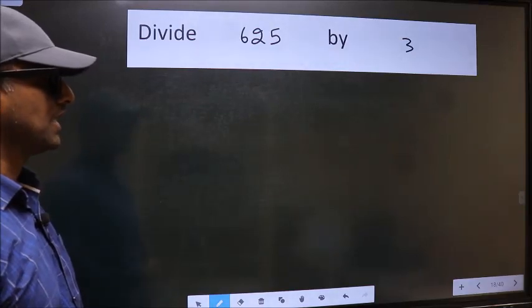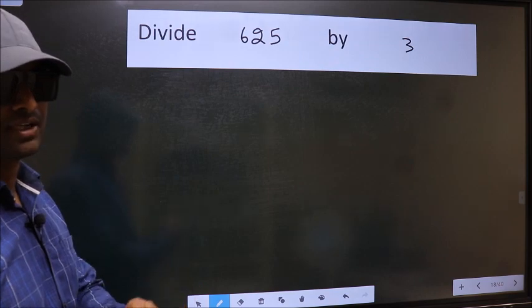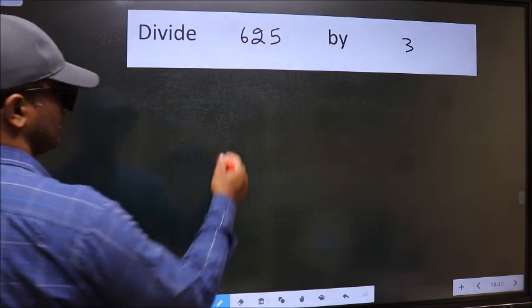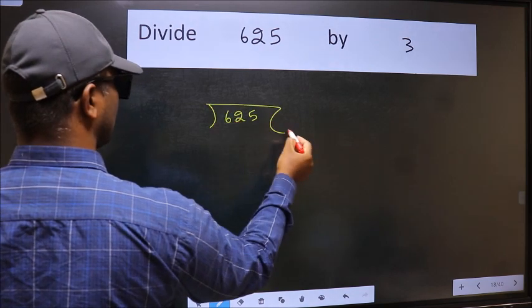Divide 625 by 3. To do this division, we should frame it in this way: 625 and 3 here.